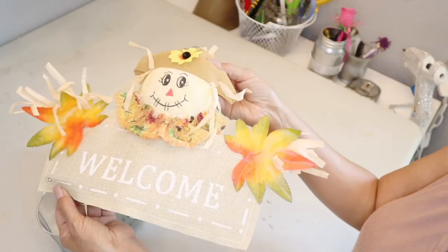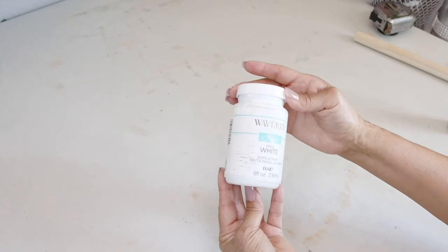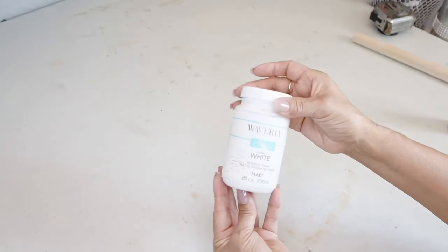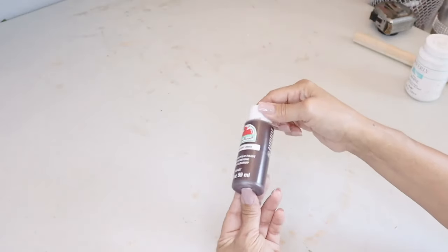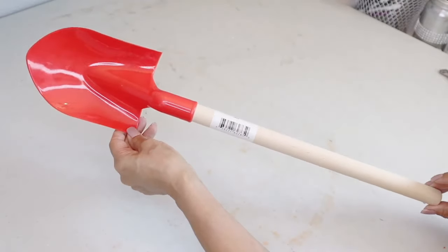And this is a fall decor from Dollar Tree, two pieces from this tower game, some Waverly chalk paint in white, and this acrylic paint in burnt umber. I'll be using the sticks from this shovel, two of them.